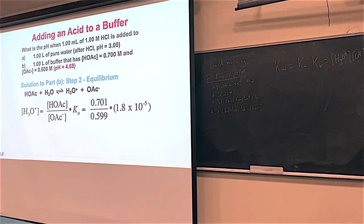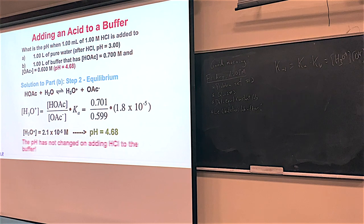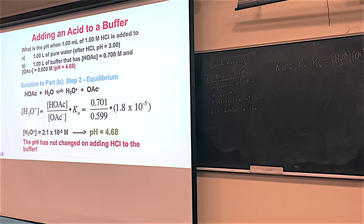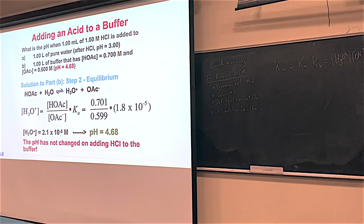Acid was 0.701, base was 0.599, Ka = 1.8 × 10⁻⁵. Hydronium = 2.1 × 10⁻⁵, pH = minus log of that = 4.68. On Wednesday, the pH was 4.68 without adding any HCl. Now, after adding a milliliter of HCl to the same buffer system, the pH has not changed. It dropped the pH four orders of magnitude when added to water, but the buffer fought it off — no change whatsoever.